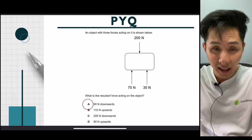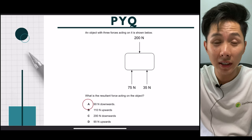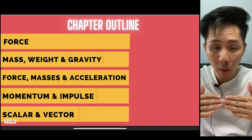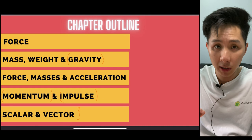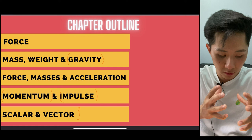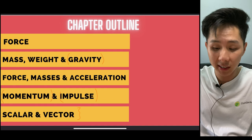That's the end of this chapter. In this video we learned: different types of forces, how gravitational force works, how force, mass and acceleration relate through Newton's laws, and also momentum, impulse, and the differences between scalar and vector quantities. Thank you so much for watching — I'll see you in the next video where we'll explore topics on moment.